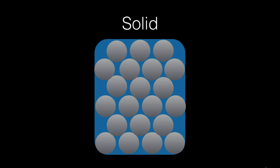In review, solids have a definite shape and a definite volume, and that's because their particles are in a fixed position. They can vibrate, but they're fixed, and they don't move a whole lot.